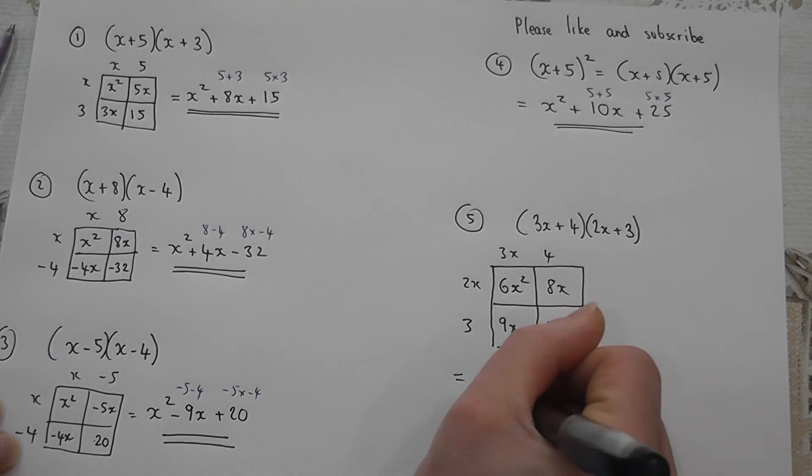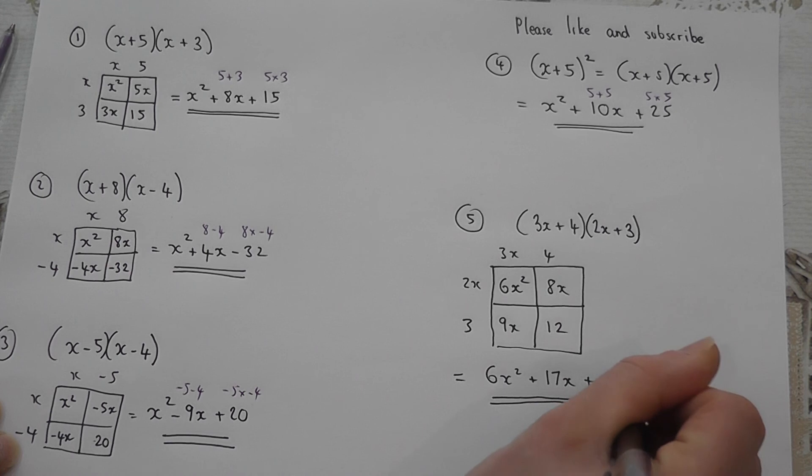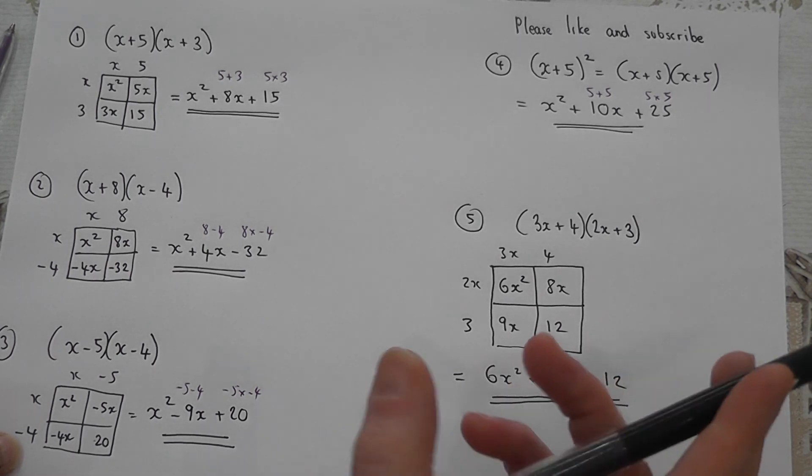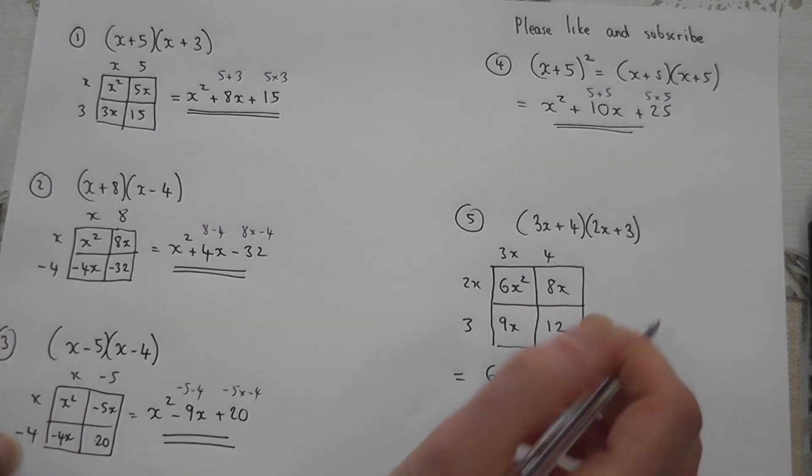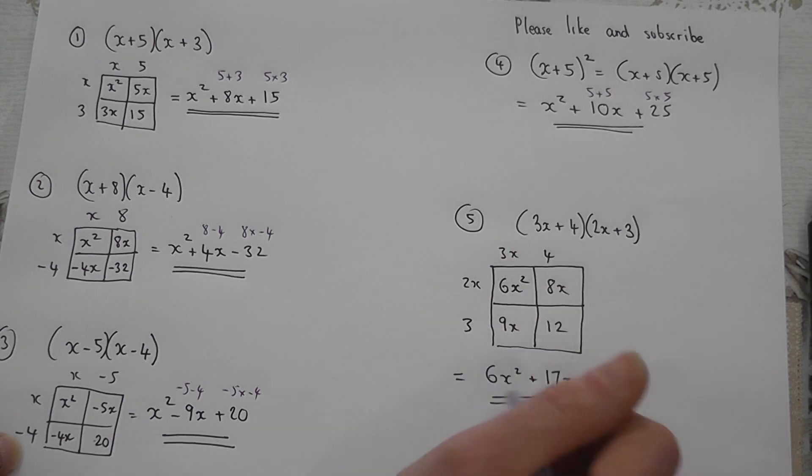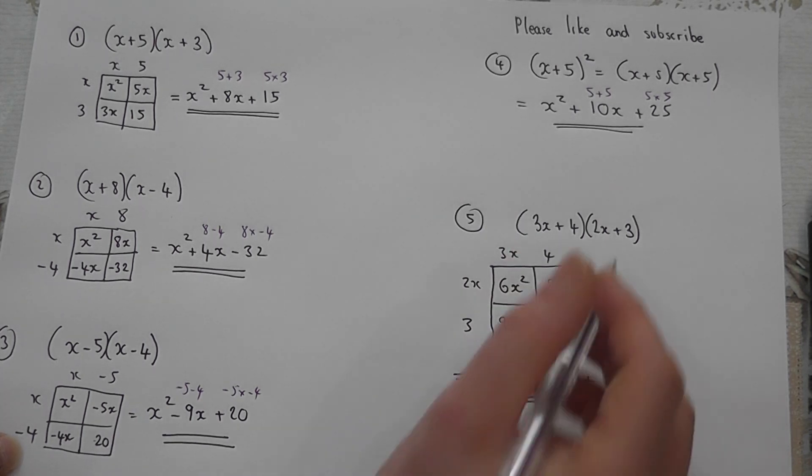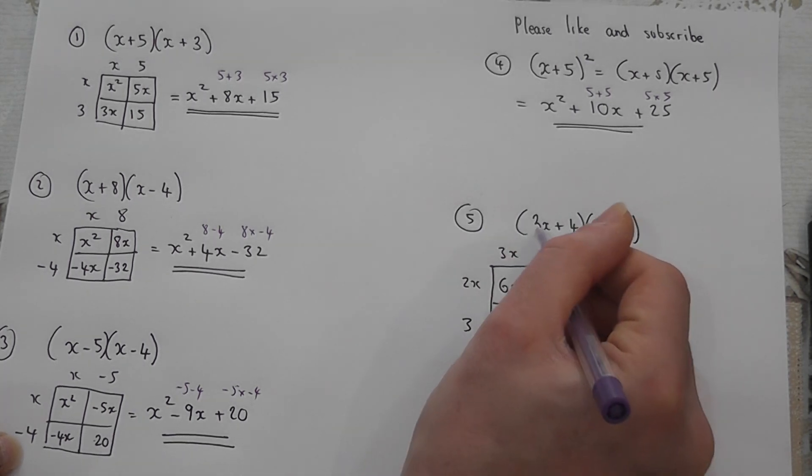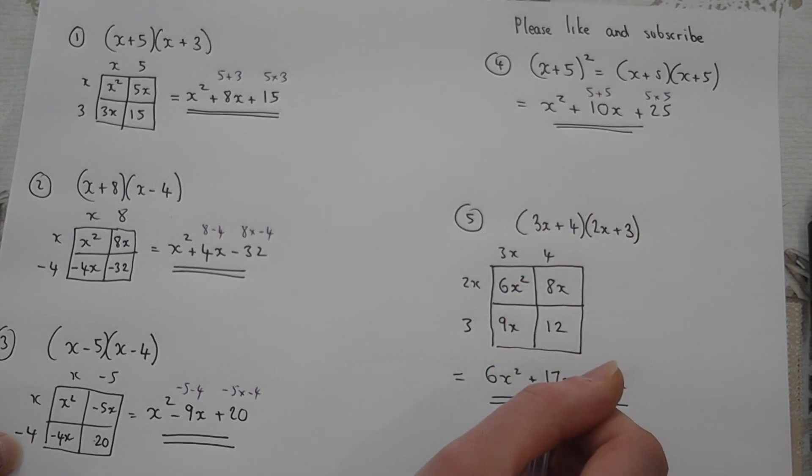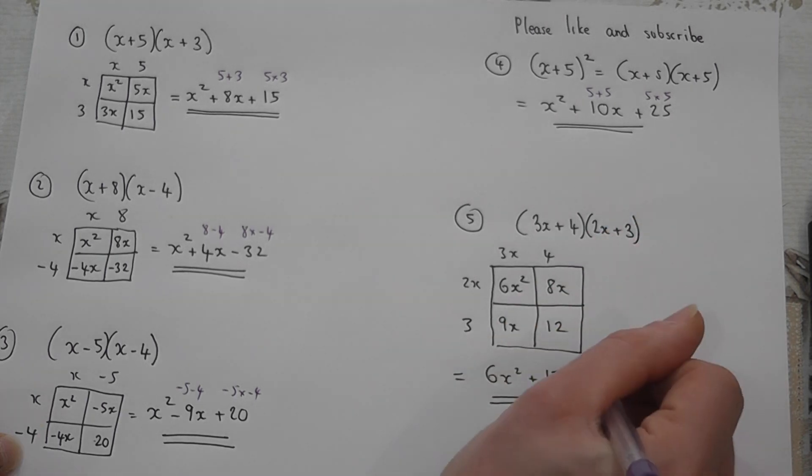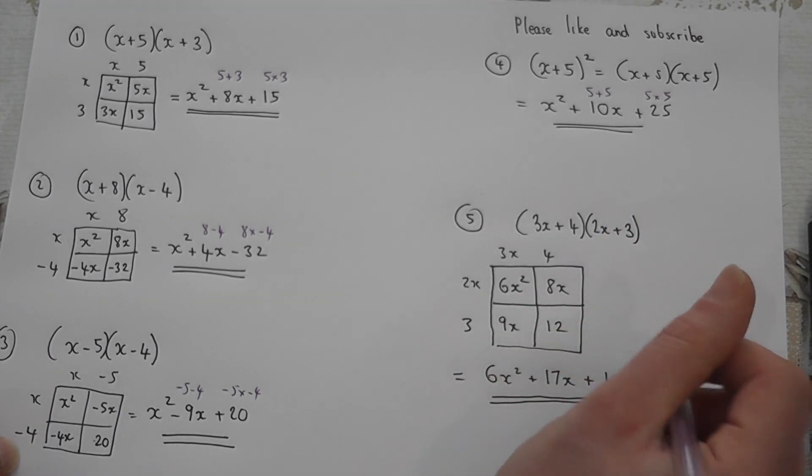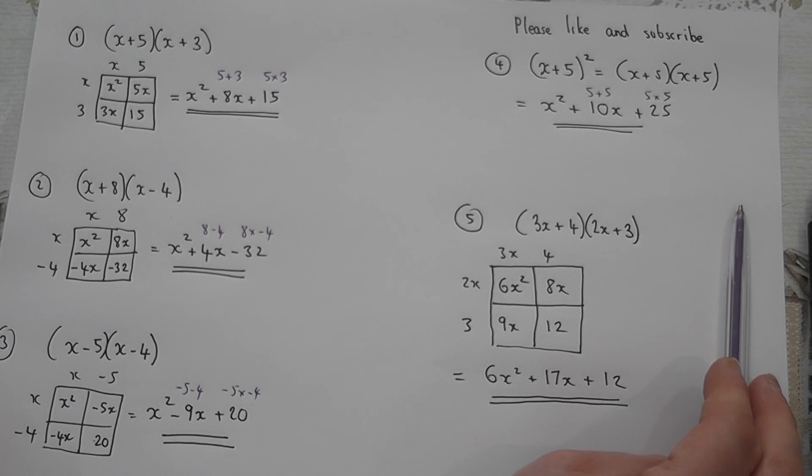So it becomes 6x squared plus 17x plus 12. So the trick doesn't really work. But in terms of shortcuts, 4 times 2 is 8. 3 times 3 is 9. 9 plus 8 is 17. And the 4 times 3 is 12. That still does hold. So this is how you expand double brackets.